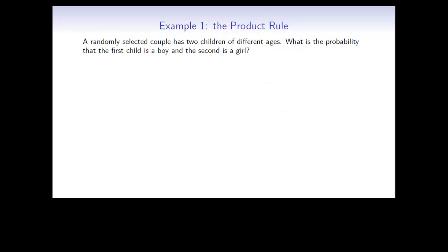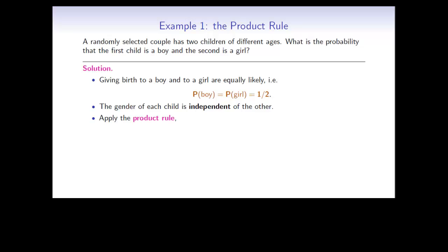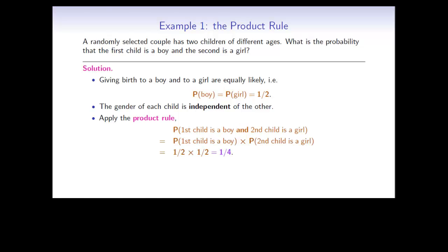Here's an example. Suppose that a randomly selected couple has two children of different ages. What is the probability that the first child is a boy and the second is a girl? Well, giving birth to a boy and to a girl are equally likely — their probabilities are the same, a half each. The gender of each child is independent of the gender of the other child. This means that we can apply the product rule, so that the probability of the first child being a boy and the second child being a girl is a half multiplied by a half, which gives a quarter.